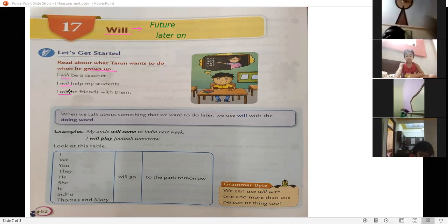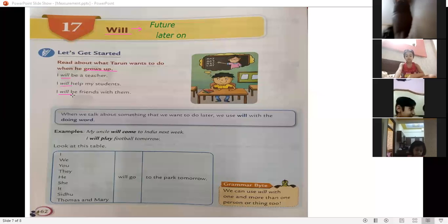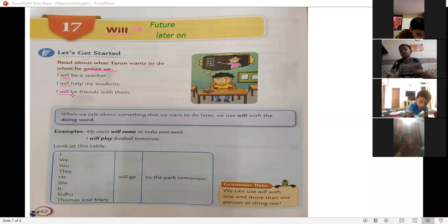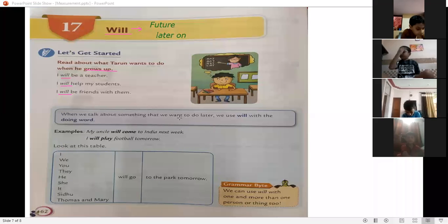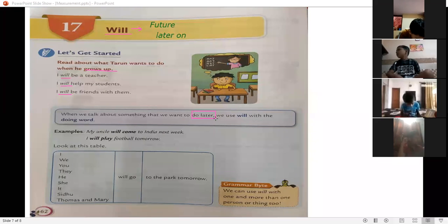This means jabhi bhi hum kuch bhi baat kar raha hai, aisa kaam joh beta future mein ho na hai, joh kaam baad mein ho ga, uske liye hum Will use karate hain. When we talk about something, jab hum kisi chiz ki baat karate hain that we want to do later, ek aisi chiz joh hum baad mein karenge. Ham kap karenge? Baad mein. Very good. Joh bhi hum later on karenge, baad mein karenge, uske liye hum use karate hain, will.